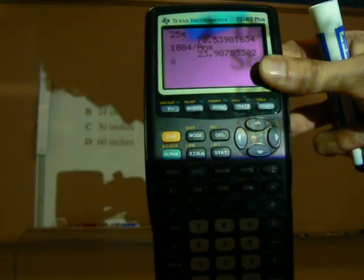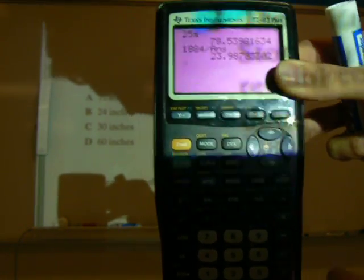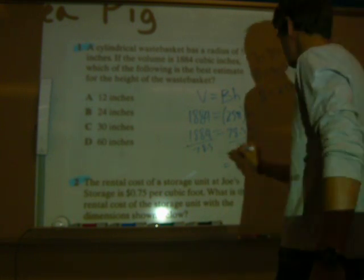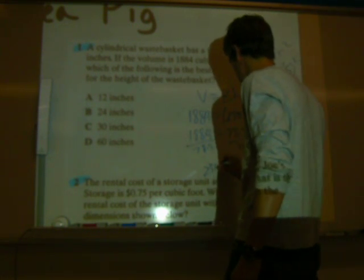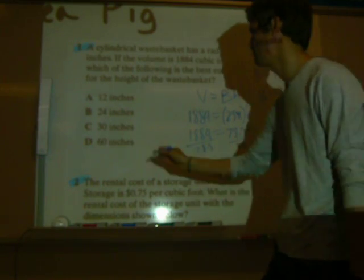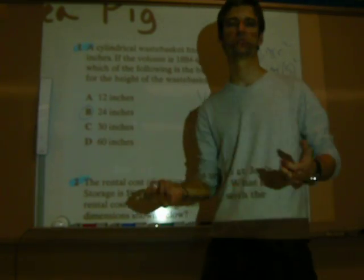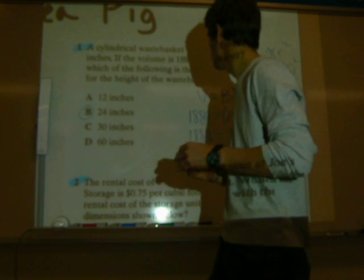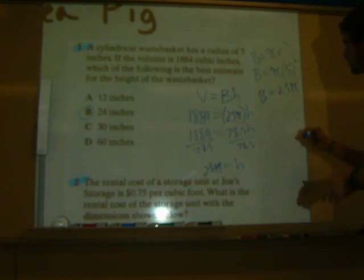So, the correct answer is going to be 23.99. So, 23.99 is going to round up to your answer of B, 24 inches. So, just be careful on that one. It's not too hard. You just have to remember how to solve for your h.